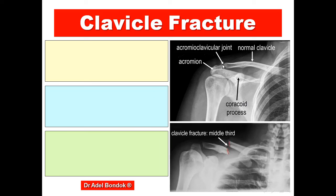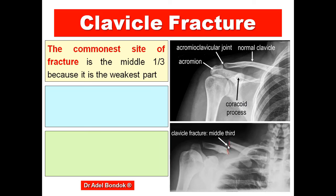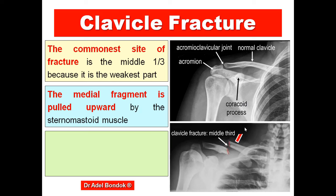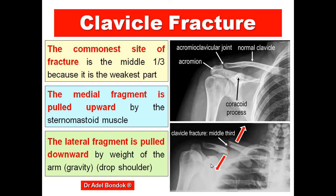Regarding clavicle fracture: the common site is the middle third, which is the weakest point. After fracture, there is displacement of both fragments. The medial segment is pulled upward by the sternocleidomastoid, while the lateral segment is pulled downward by gravity and the weight of the upper limb, resulting in a dropped shoulder.